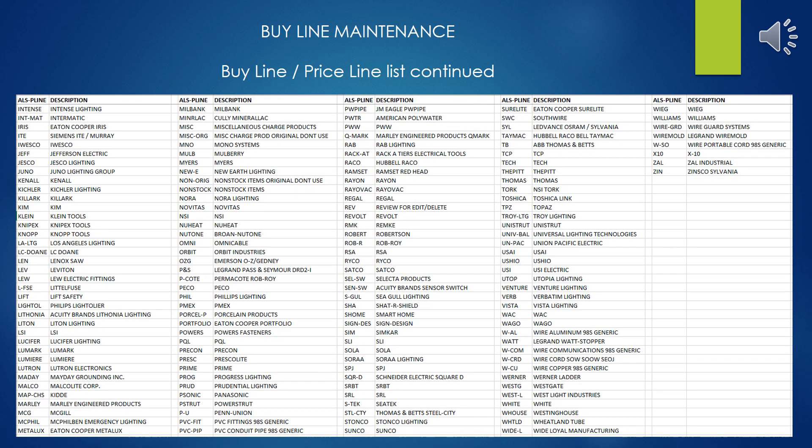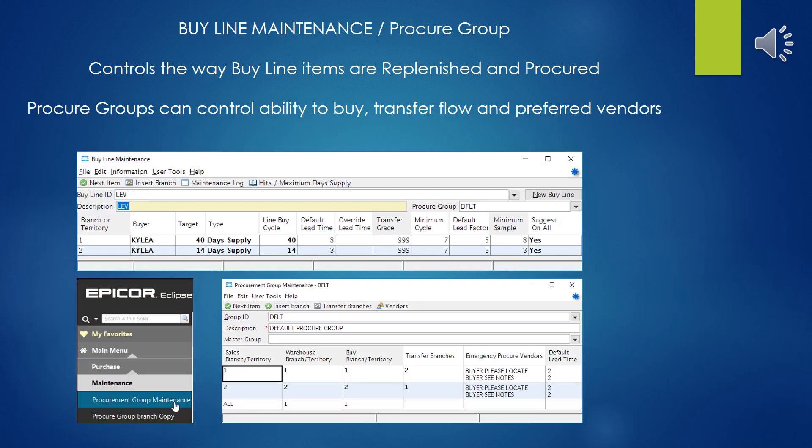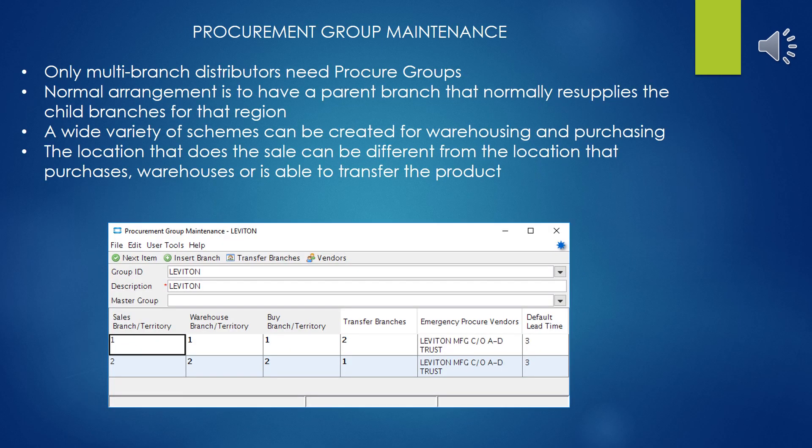Here's just the continuation of that list from a previous slide. When you set up a buy line, you also have to specify the procure group that's involved. The procure group controls the way the buy line items are replenished and procured. The procure groups can control the ability to buy, the transfer flow from branch to branch, and the preferred vendors. So much of the logic in the buy line is actually being controlled from the procurement group attached to the buy line.